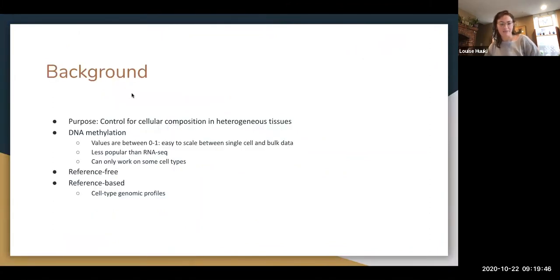So background, the whole purpose of all this is to control for cellular composition in heterogeneous tissue when you do RNA sequencing, so different amounts of different types of cells don't sway your results, or you can control for that. And then one strategy for doing this is using DNA methylation data. For that type of data, values are between zero and one, whether it's single cell or bulk data. So it's easier to compare single cell data to bulk data because you don't have to scale it, which is another step of how you're going to make those two types of data comparable.